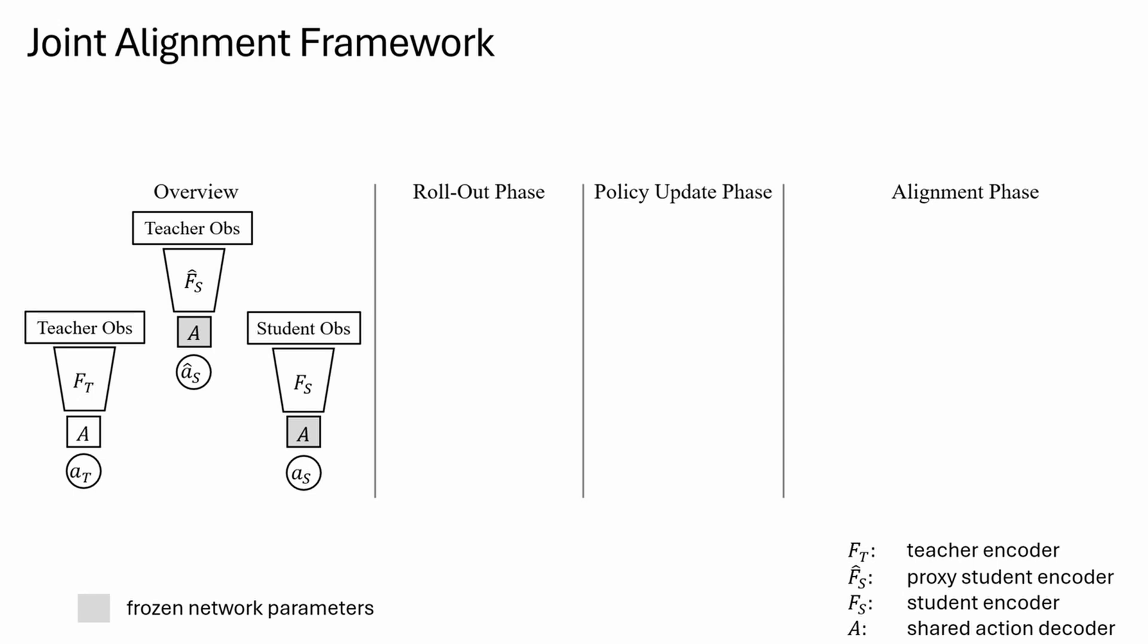Additionally, our proposed framework consists of three alternating training phases. In the standard rollout phase, we add the penalty term computed based on the action difference between the teacher and the proxy student to the reward computation.